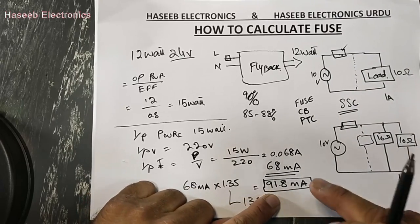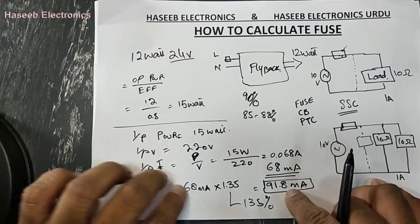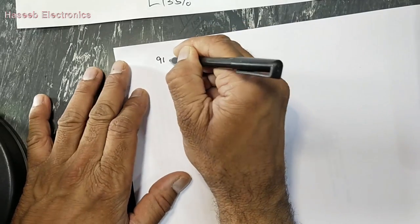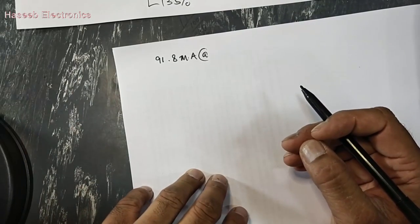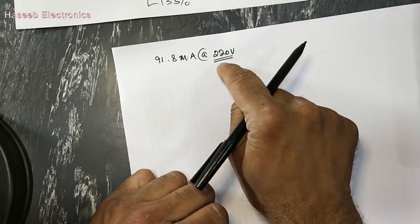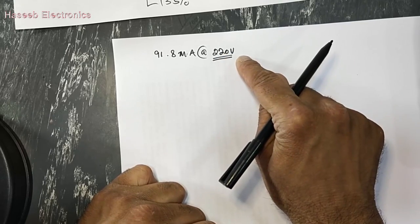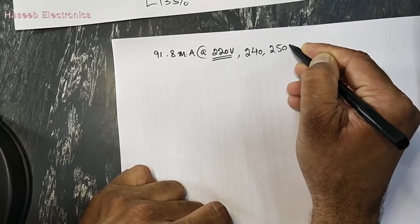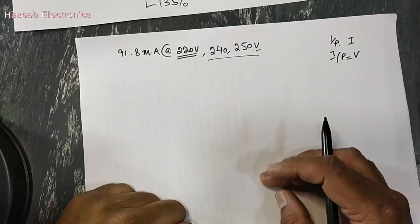Now we need to select the next standard value above 91.8 milliampere — we can say 100 milliampere or 125 milliampere. For the voltage value: that is 220 volt, and the voltage of the fuse must be equal to or above the operating voltage. You can select a fuse rated 220 volt, 240 volt, or 250 volt. So we now have covered two steps: input current and input voltage.